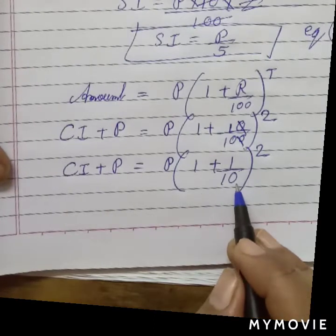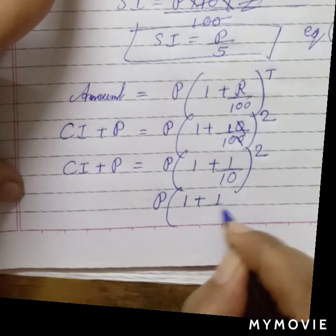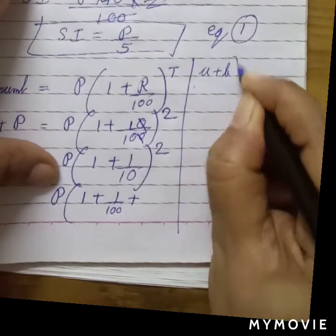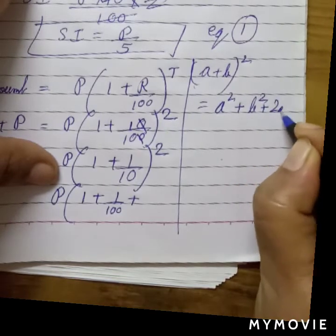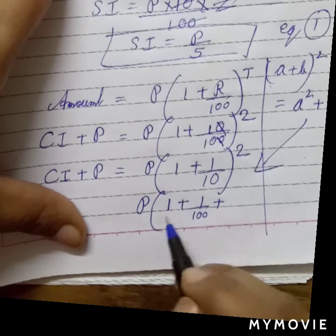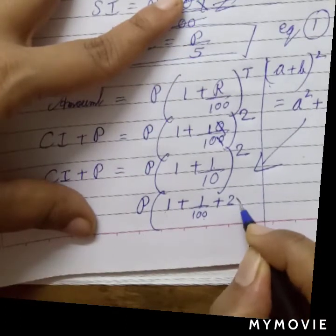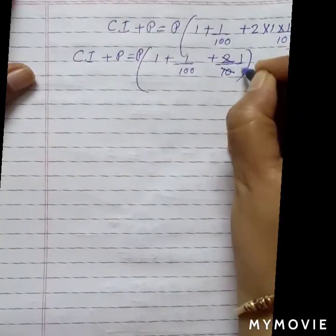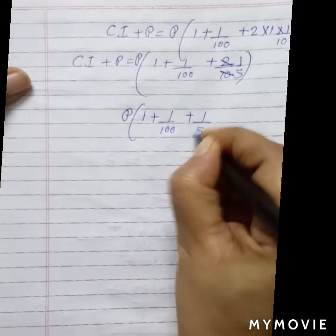If you observe closely, this is in the form of (A + B) whole square. We know the formula: (A + B)² = A² + B² + 2AB. Applying the formula: A = 1, so A² = 1; B = 1/10, so B² = 1/100; and 2AB = 2 × 1 × 1/10 = 1/5. So we have P × (1 + 1/100 + 1/5).